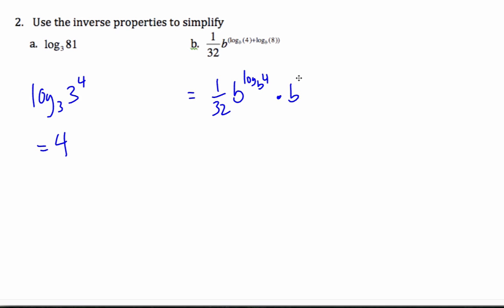It's going to be b to the log base b 4 times b to the log base b 8. So this is 1 over 32 times, well by the inverse properties this is just 4 times, by the inverse properties this is just 8. And so it ends up being just 1.